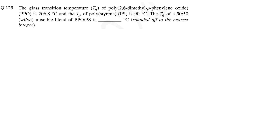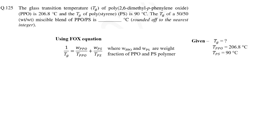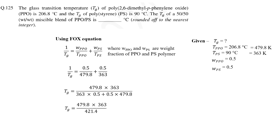In question 125 we need to find the Tg of a 50-50 blend of PPO and polystyrene. The Tg of PPO and polystyrene is given, so we can solve this question using the Fox equation. Before inserting temperature in the equation we need to convert them to Kelvin. Since it is a 50-50 blend, the weight fraction will be 0.5 for both. Now we can insert these values in the equation and calculate the Tg of the blend. On simplification we find that the Tg of the blend is 140 degrees Celsius.